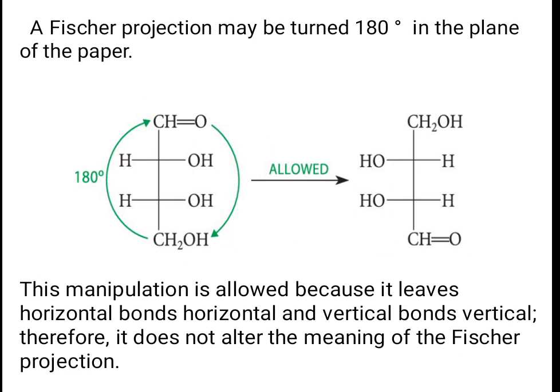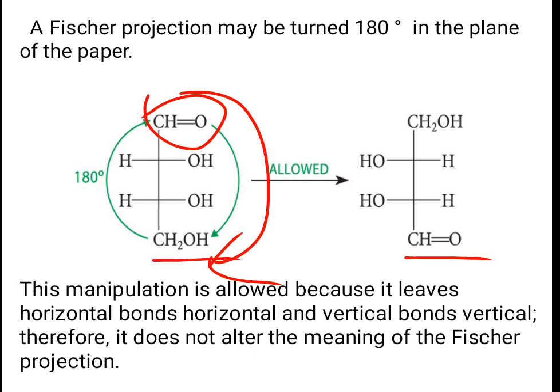A Fisher projection may be turned 180 degrees in the plane of the paper. This manipulation is allowed because it leaves horizontal bonds horizontal and vertical bonds vertical, therefore it does not alter the meaning of the projection. The top carbon goes to the bottom and the bottom carbon comes to the top. This is Fisher-allowed.